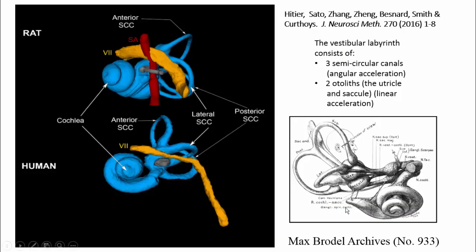If we look at this illustration from Brodel, we can see that under and beside the horizontal canal there is the utricle, and below that the saccule. These are two of the oldest parts of the vestibular system, with analogues even in invertebrates. These are the otolithic parts of the labyrinth that respond to gravitational acceleration as well as other kinds of linear acceleration.